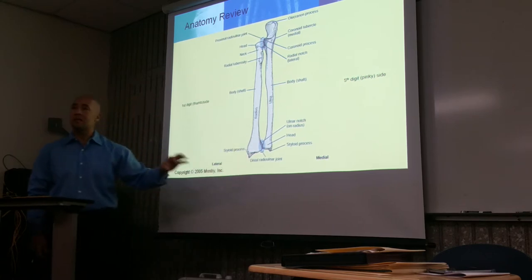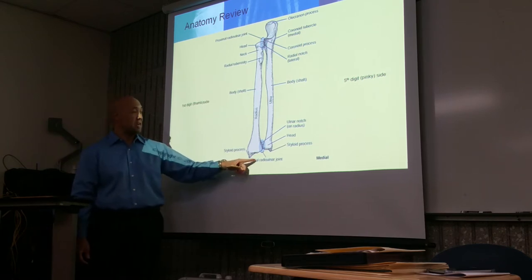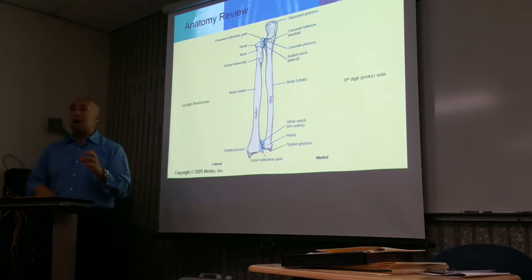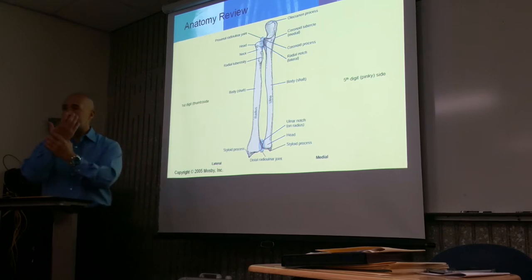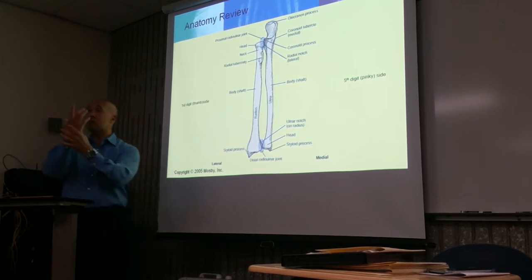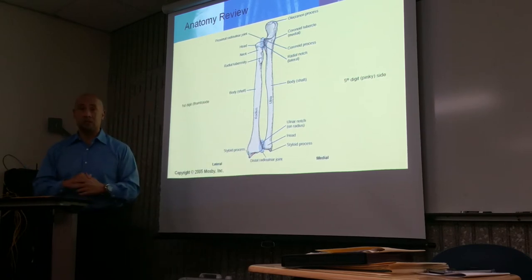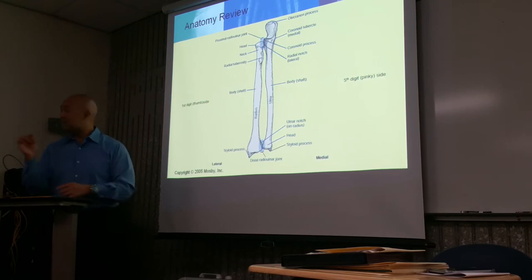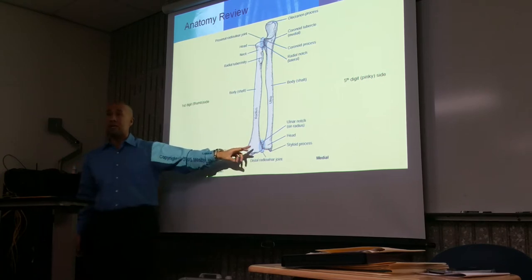With the radius and the carpals, you have the radiocarpal joint. When we're talking about the wrist joint, the only bone that articulates with the carpals is the radius. The ulna technically isn't part of the wrist joint — it doesn't articulate with the carpal bones. It's only the radius.